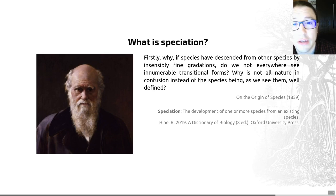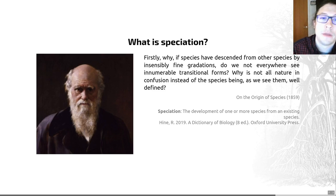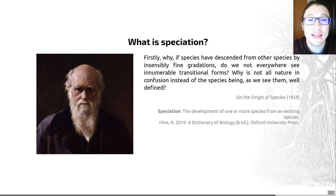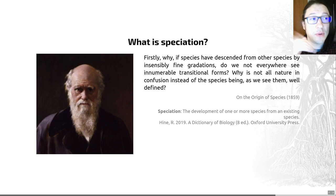Speciation is essentially the origination of new species, and this usually occurs from a single ancestral population. It's important to study because it's the origin of the biodiversity we see in the world today. That biodiversity is dictated by the balance between speciation and extinction — those two are balancing each other out, and where that equilibrium lies defines the biodiversity of the globe.